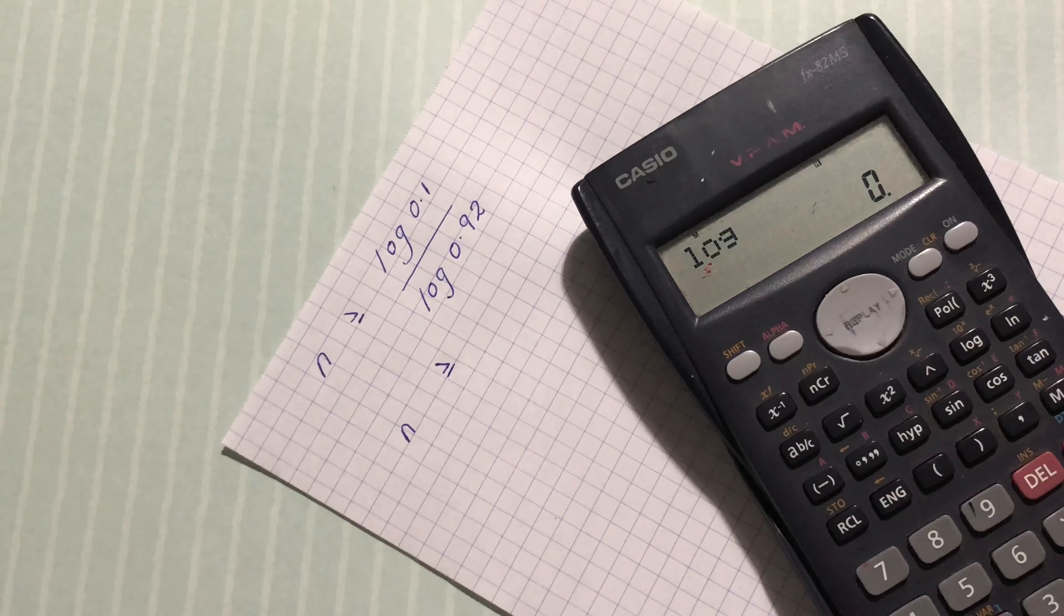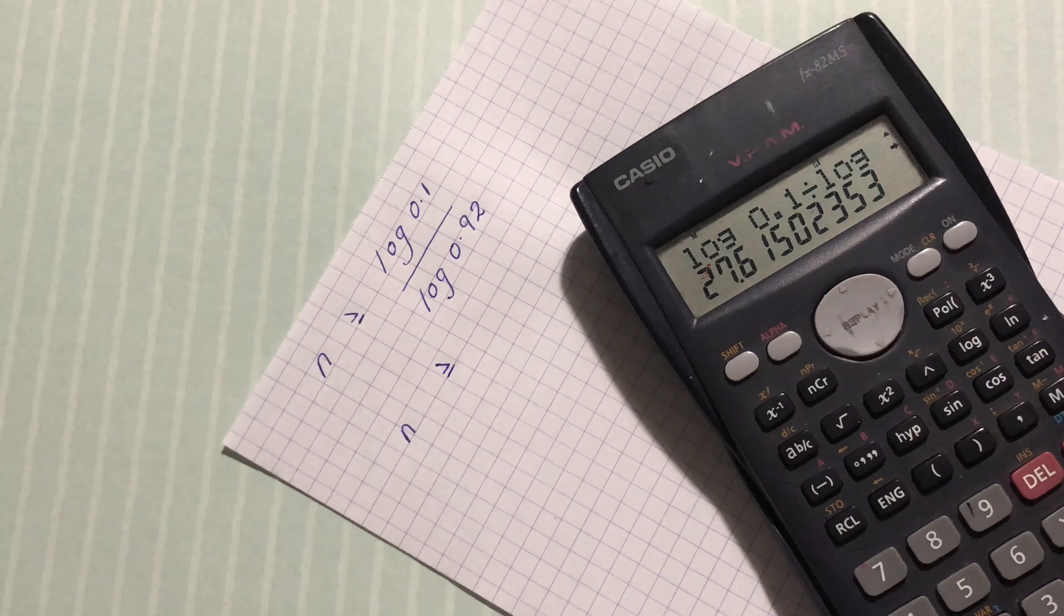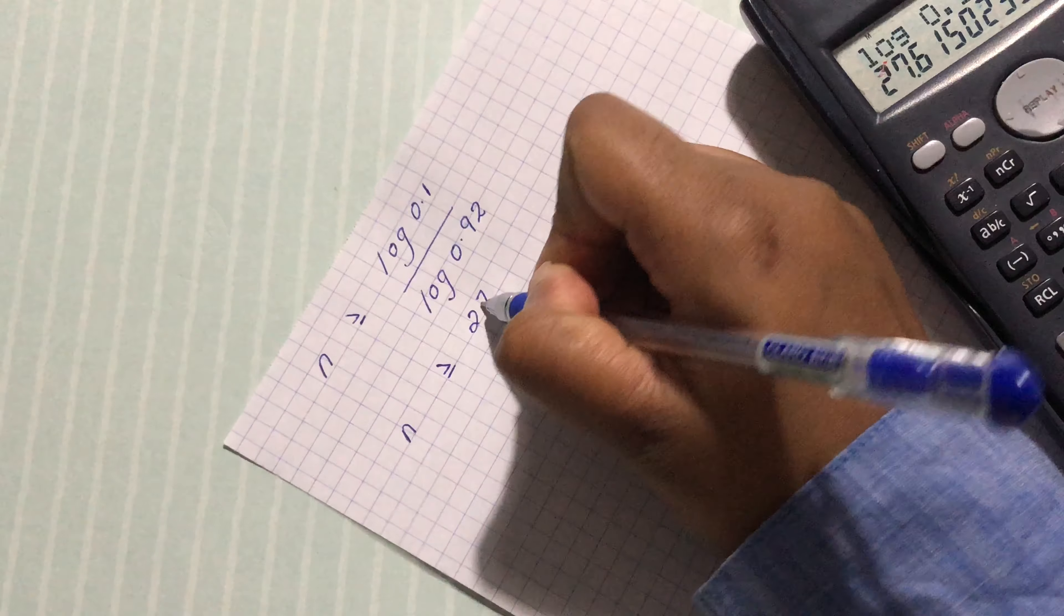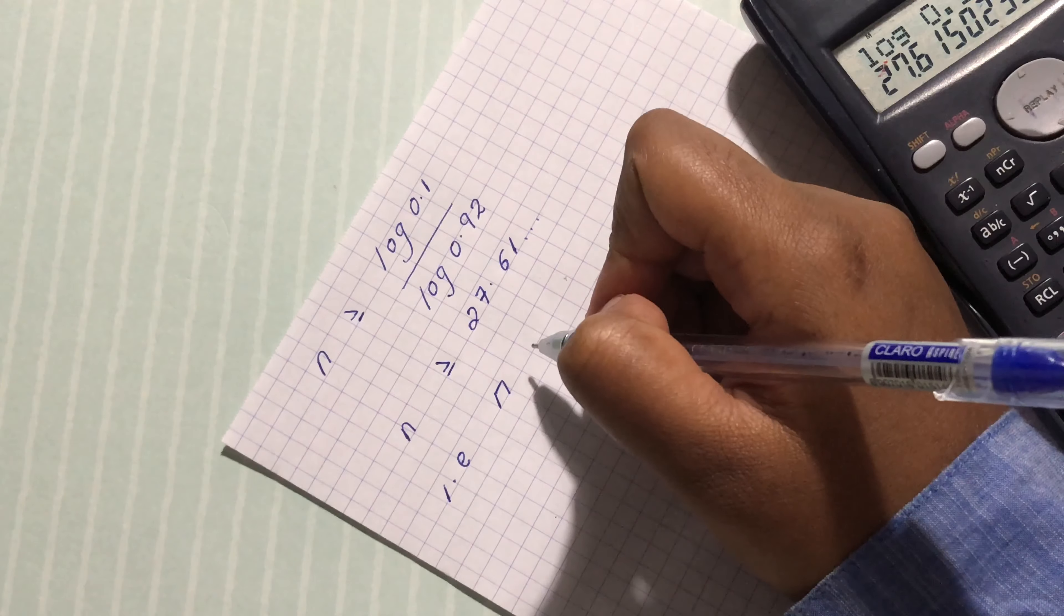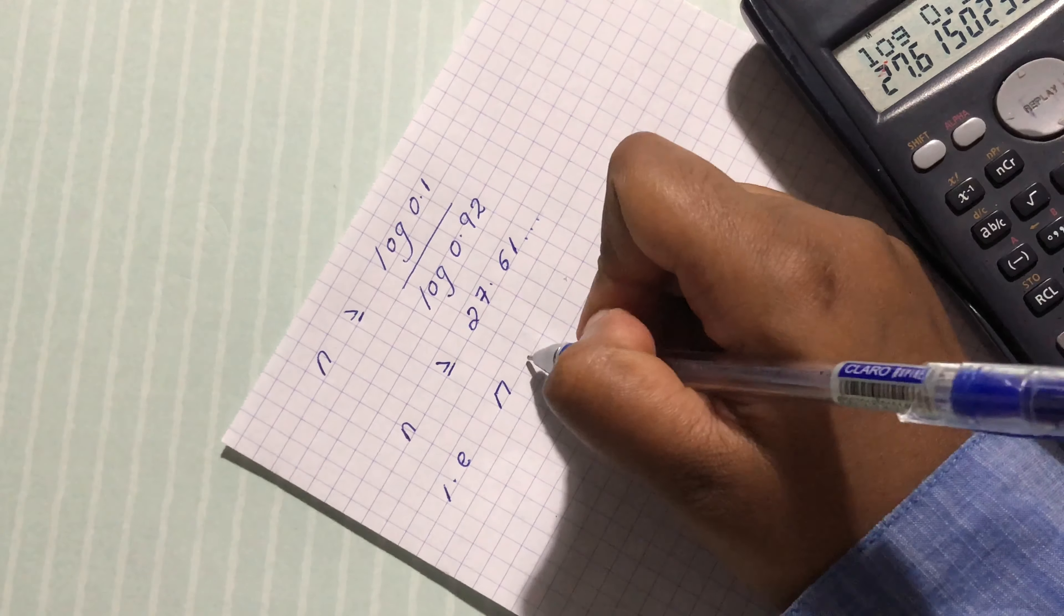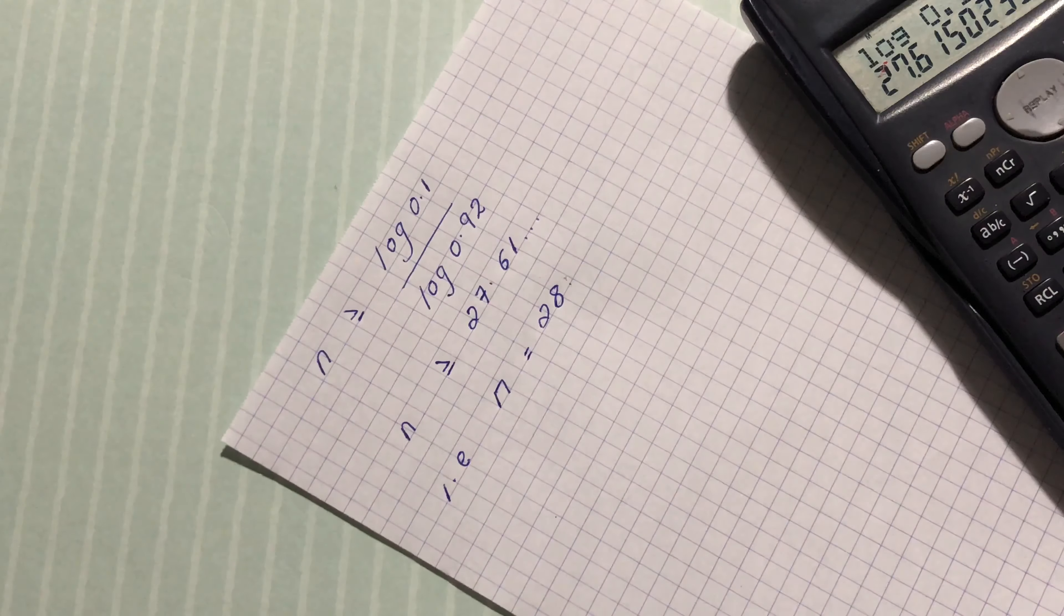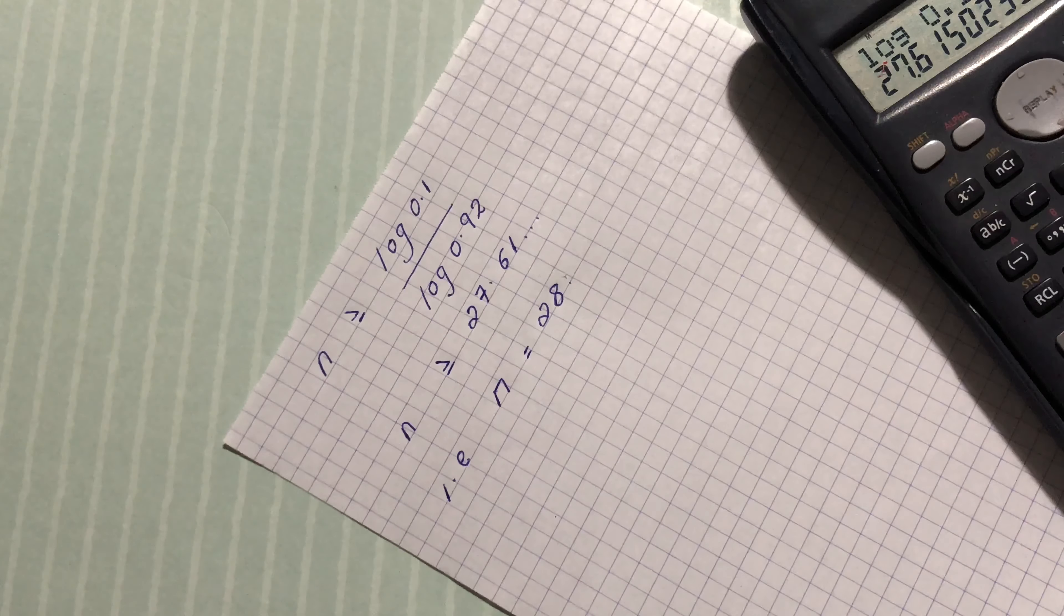log of 0.92 we have 27.61, that is the smallest value of n. So there we have it, the smallest value of n.